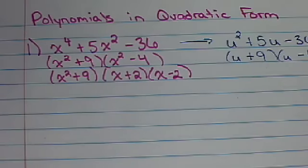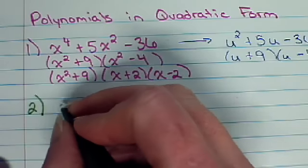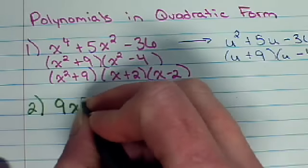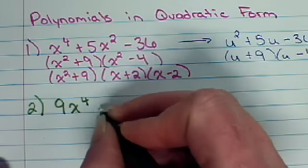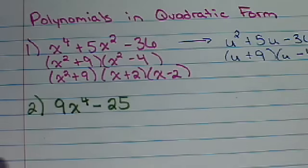And speaking of difference of 2 squared, we can also have those higher polynomials that act like the difference of 2 squared. So, let's look at one of those. 9x to the fourth minus 25.